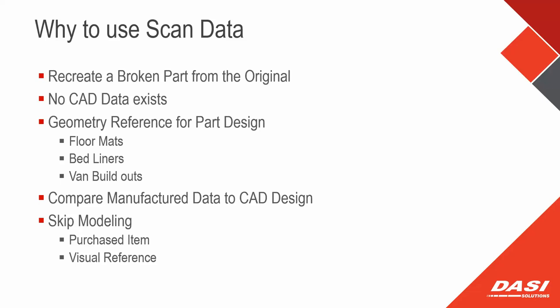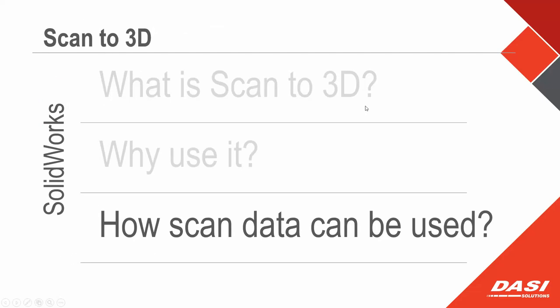Another common use is comparing manufactured data — scanning a part off the end of the assembly line, whether from a coordinate measuring machine or a 3D scanner, and comparing directly back to the CAD data. That's a next-level inspection to figure out whether things are being machined to the way the design was intended. Lastly, sometimes you just skip the modeling process — a purchased good you need to represent in an assembly that you don't want to spend time modeling.